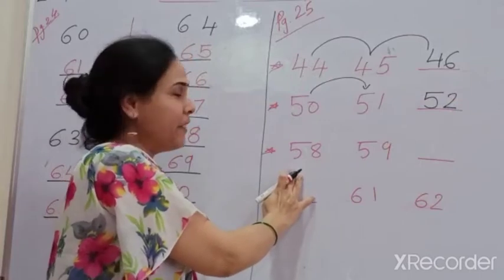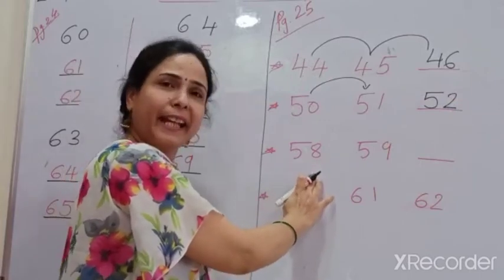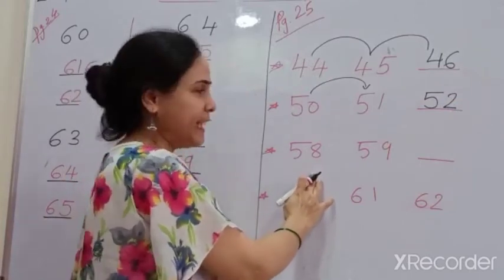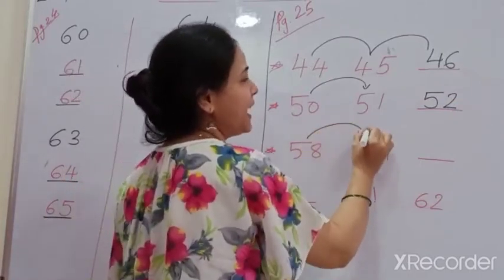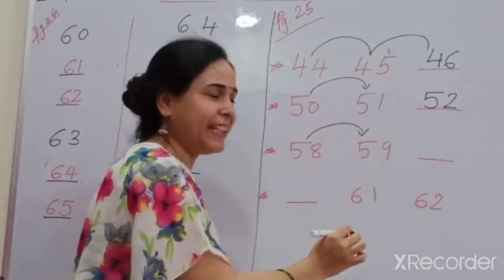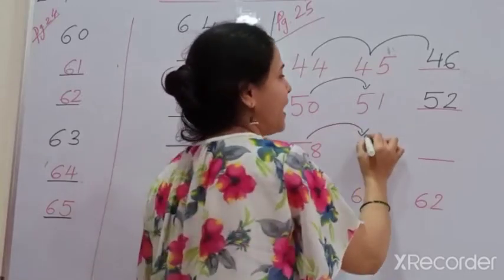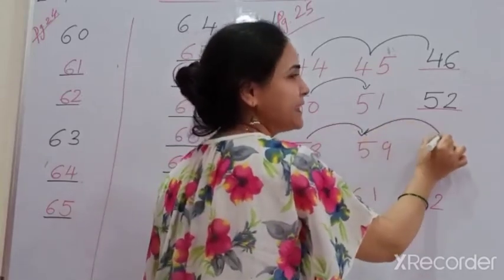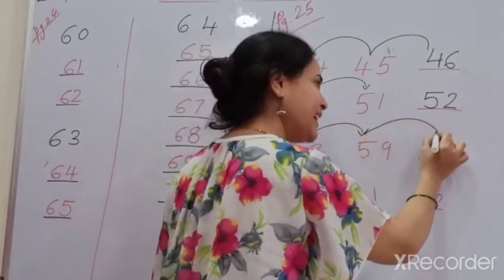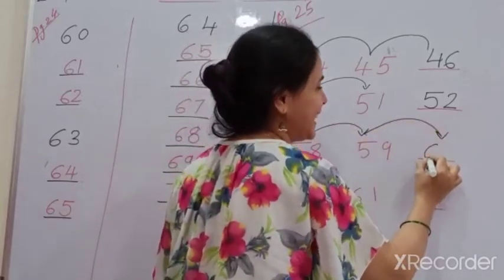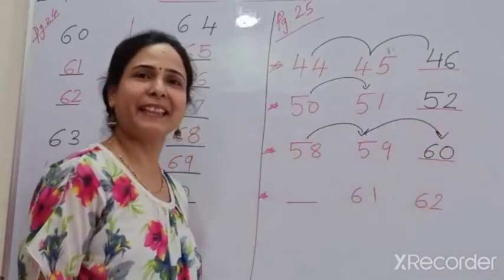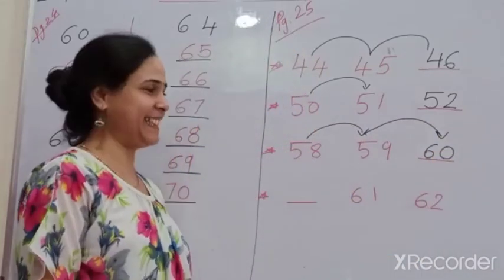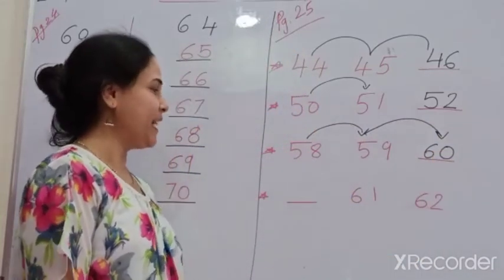Now, next line. 58, 59, 60. After 59, the number coming is 60.